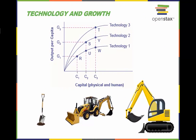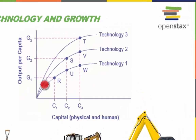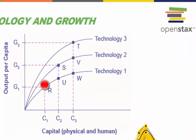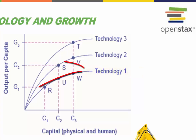Imagine that the economy starts at point R with the level of physical and human capital C1 and the output per capita at G1. If the economy relies only on capital deepening while remaining at the technology level shown by the Technology 1 line, then it would face diminishing marginal returns as it moved from point R to point U to point W.